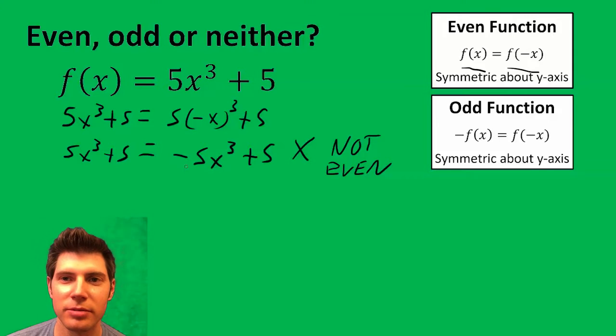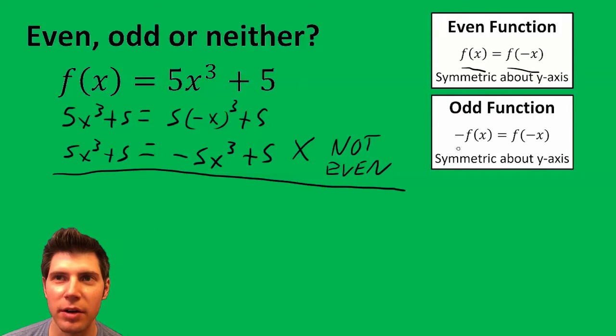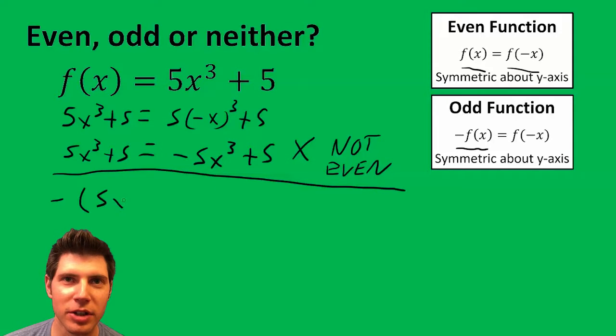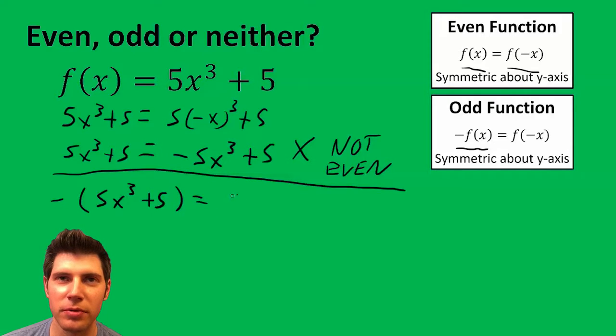It's not even close to even. Now to test for odd, we're going to do -f(x). So we throw a negative in front of the entire f(x), and then f(-x) would be 5(-x)³ + 5.